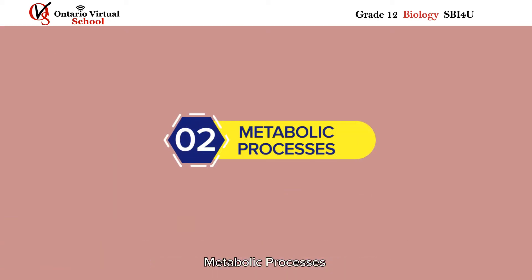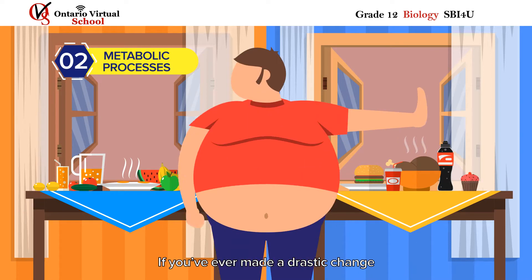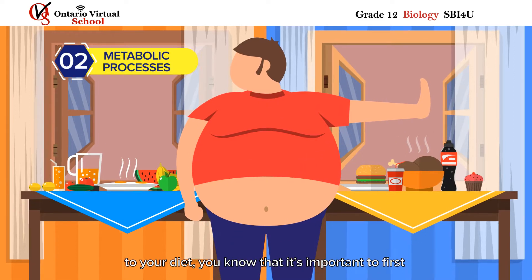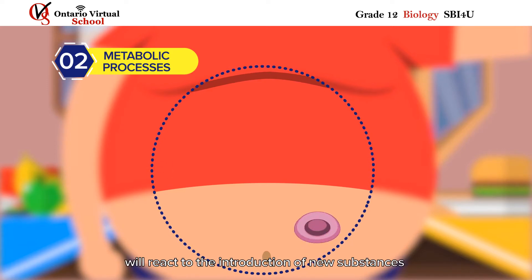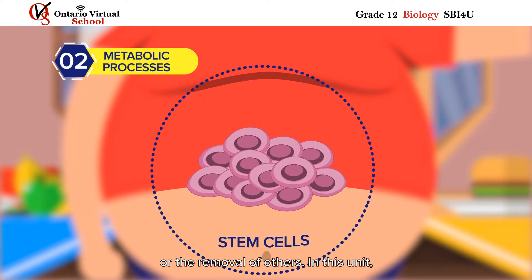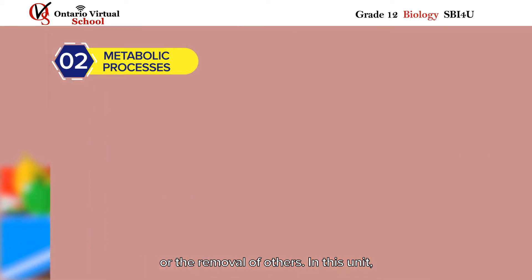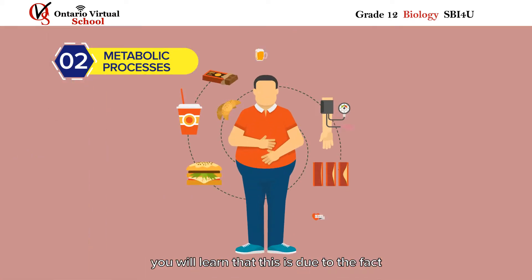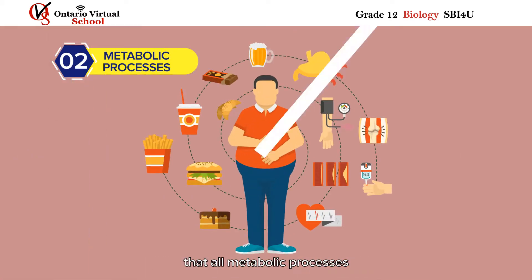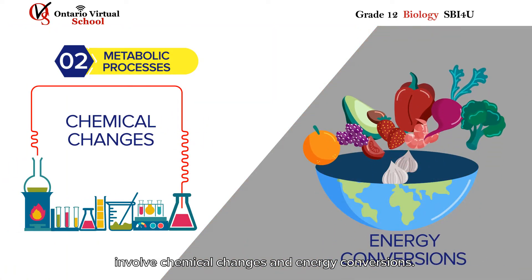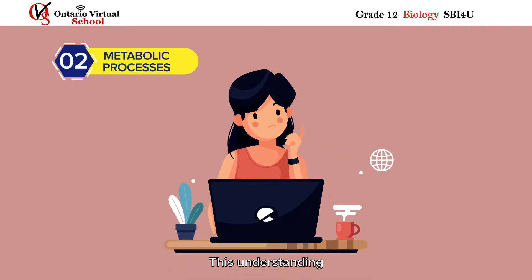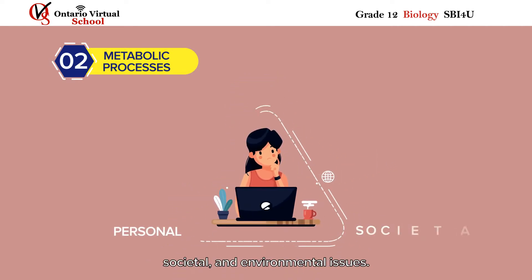Metabolic processes. If you've ever made a drastic change to your diet, you know that it's important to first understand how cells in your body will react to the introduction of new substances or the removal of others. In this unit, you will learn that all metabolic processes involve chemical changes and energy conversions. This understanding will allow you to make informed choices about a range of personal, societal, and environmental issues.